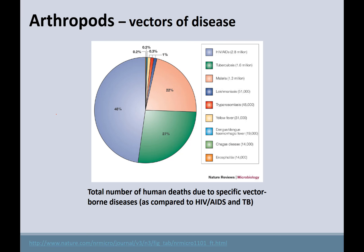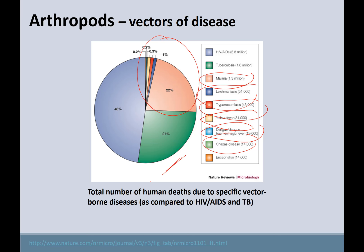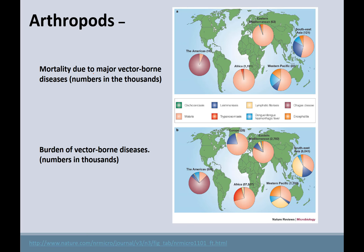These arthropod vectors are transmitting diseases including yellow fever, trypanosomes, leishmania, malaria, dengue fever, Chagas disease, and some encephalitides — almost as many deaths as tuberculosis, which is a bacterium. The total number of human deaths due to specific vector-borne diseases is around 23 percent — that's huge.